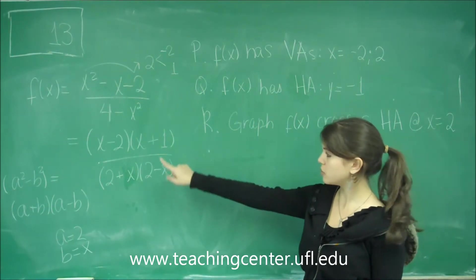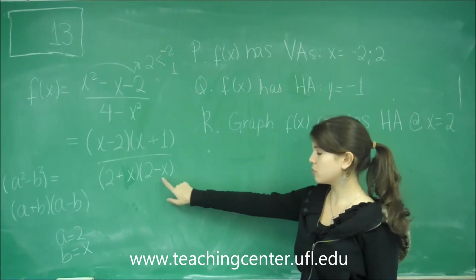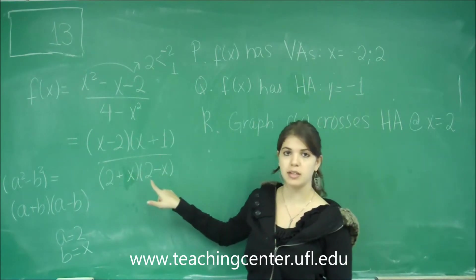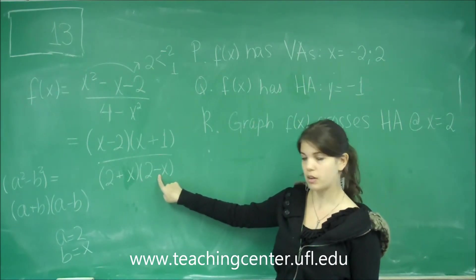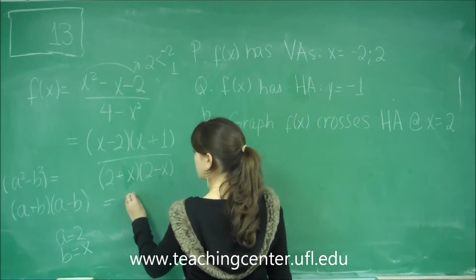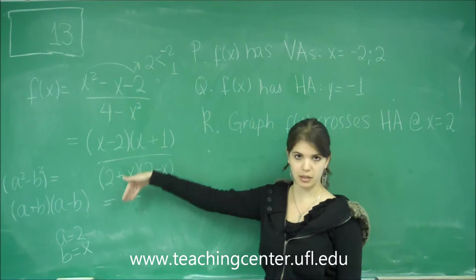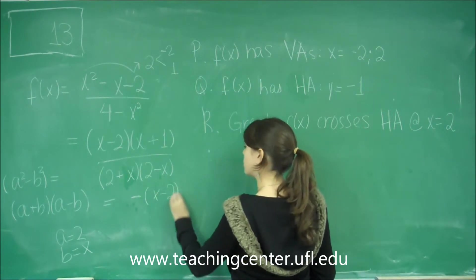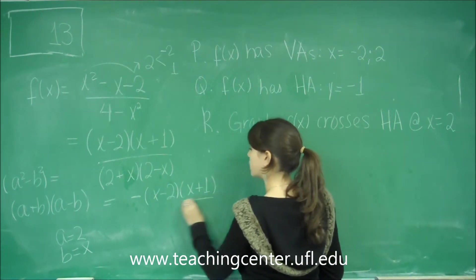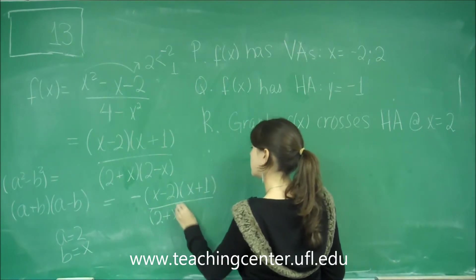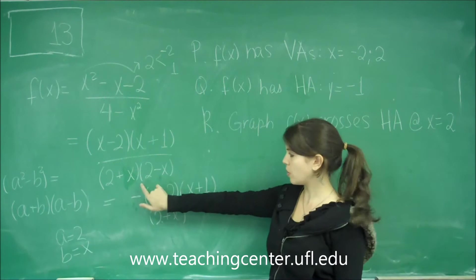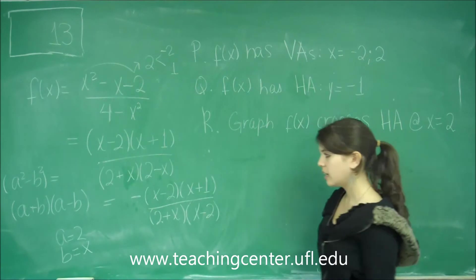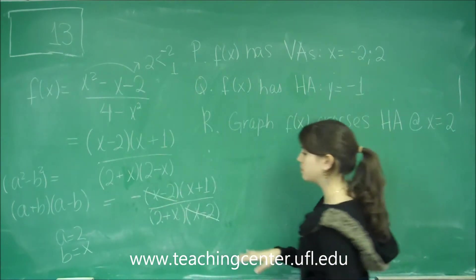We see that x minus 2 and 2 minus x are pretty similar looking. To make it the same so we can cancel it out, we just have to take a negative 1 from here. So we can rewrite that into negative. That negative 1 can go on the top and the bottom because it's just being multiplied by negative 1. So we have negative x minus 2, x plus 1, and 2 plus x. This is where we took the negative out of, so we're going to switch the sides to get x minus 2. And now that it's in this form, I can cancel that and that.